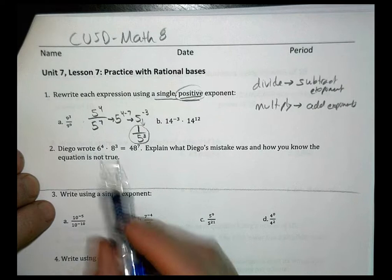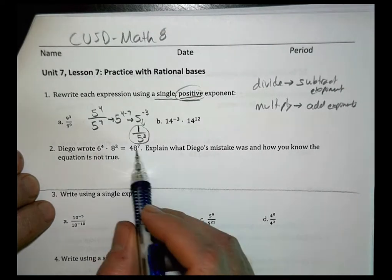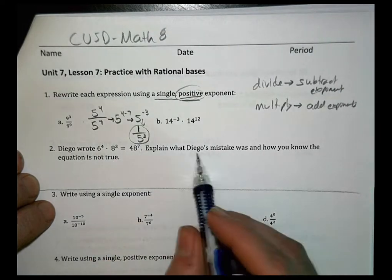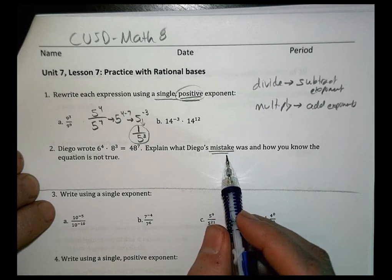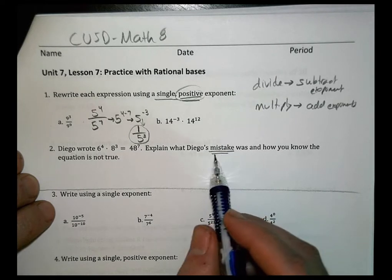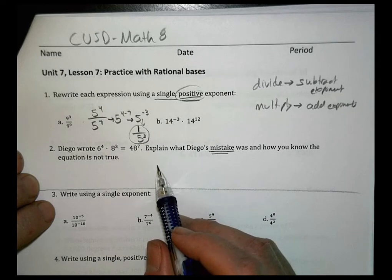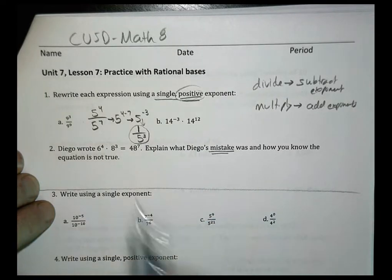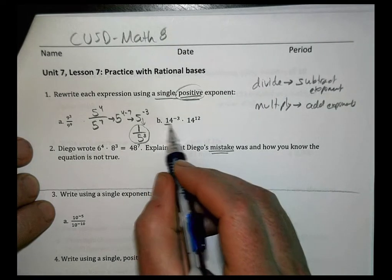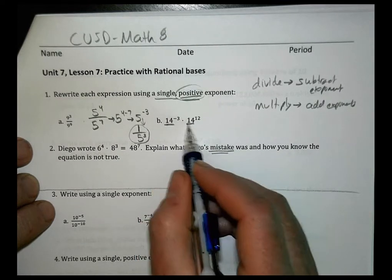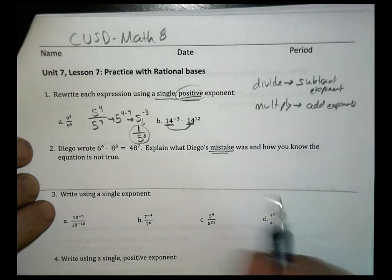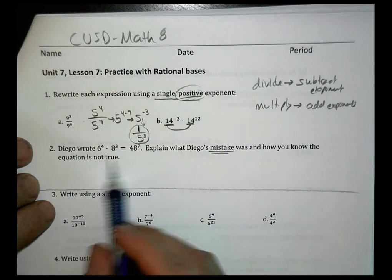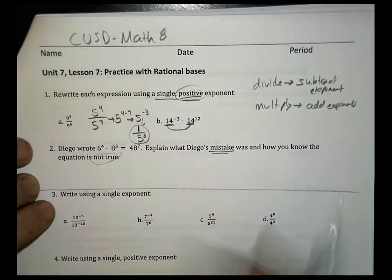Number 2 says, Diego wrote 6 to the 4th times 8 to the 3rd equals 48 to the 7th. Explain what Diego's mistake was and how you know the equation is not true. There's been a common thing in all of our lessons so far, and you can see it right here. In order to do our rules, something has to be true all the time and something was not true there, which is why his equation is not true.